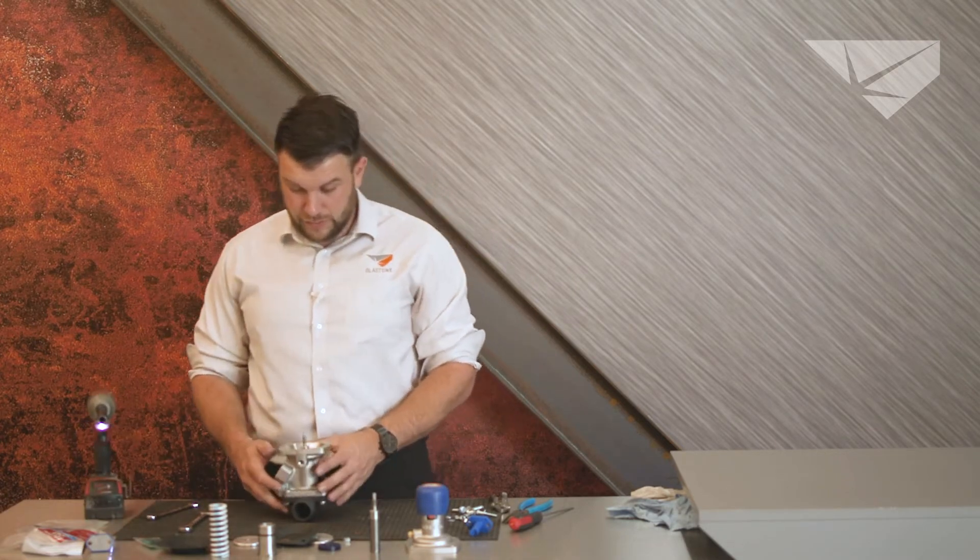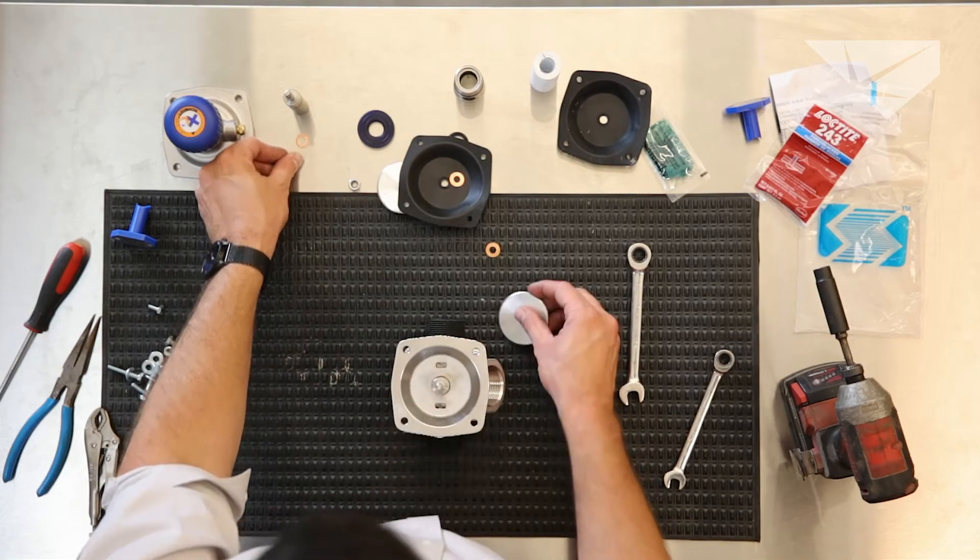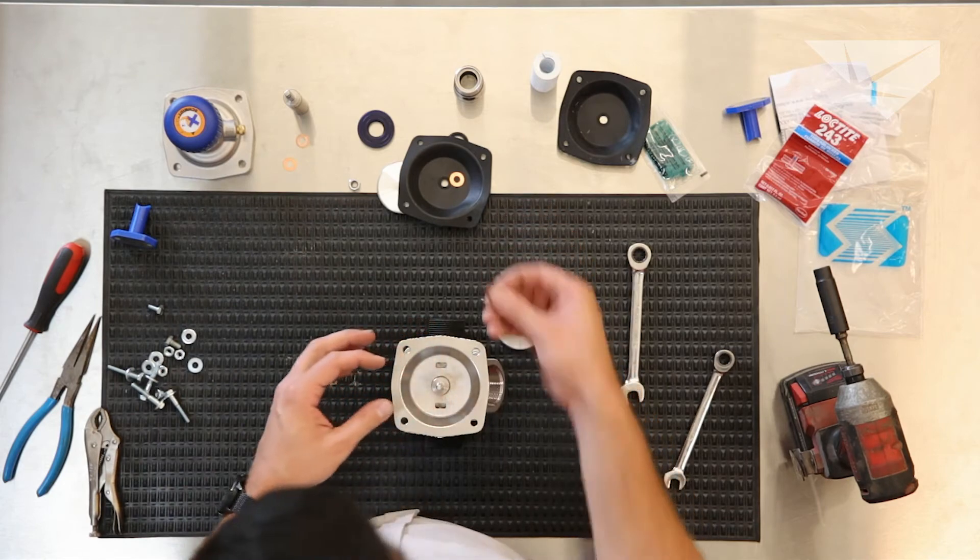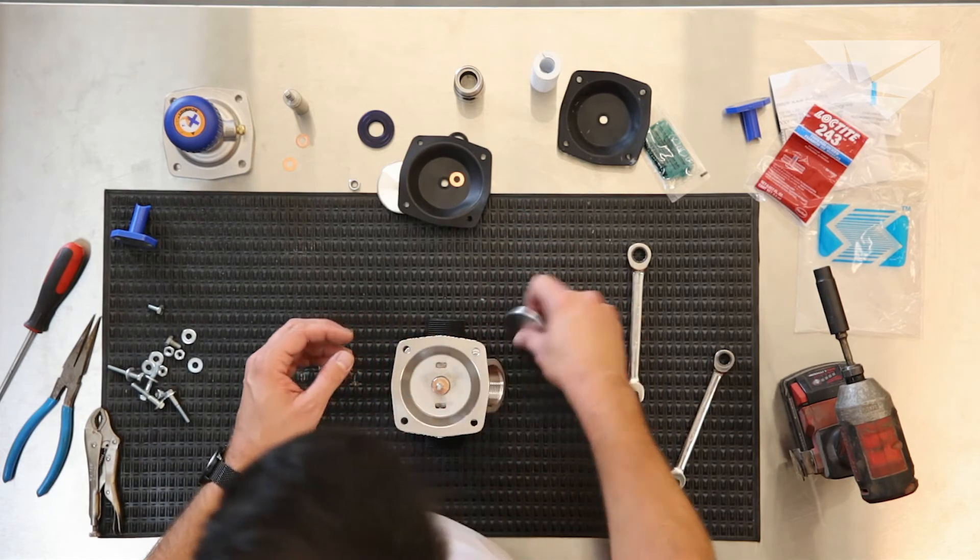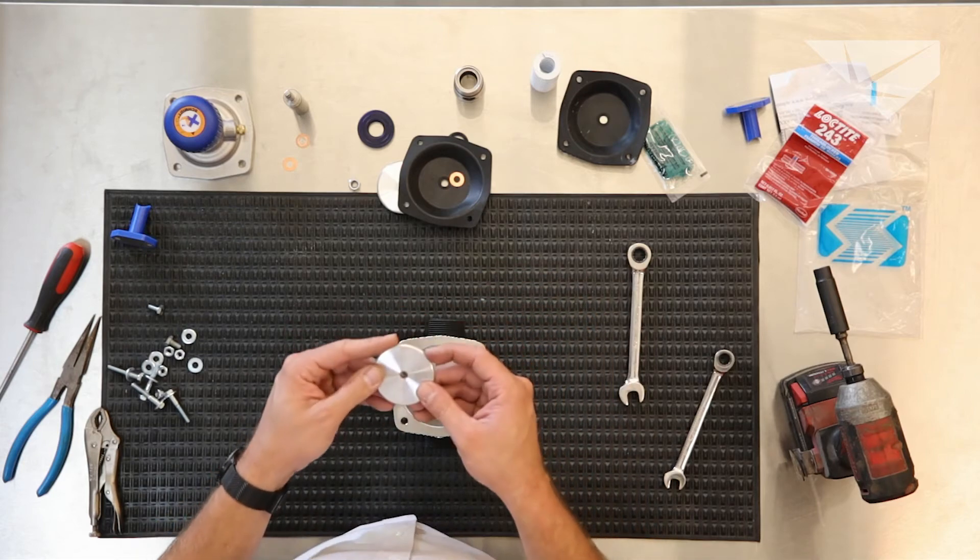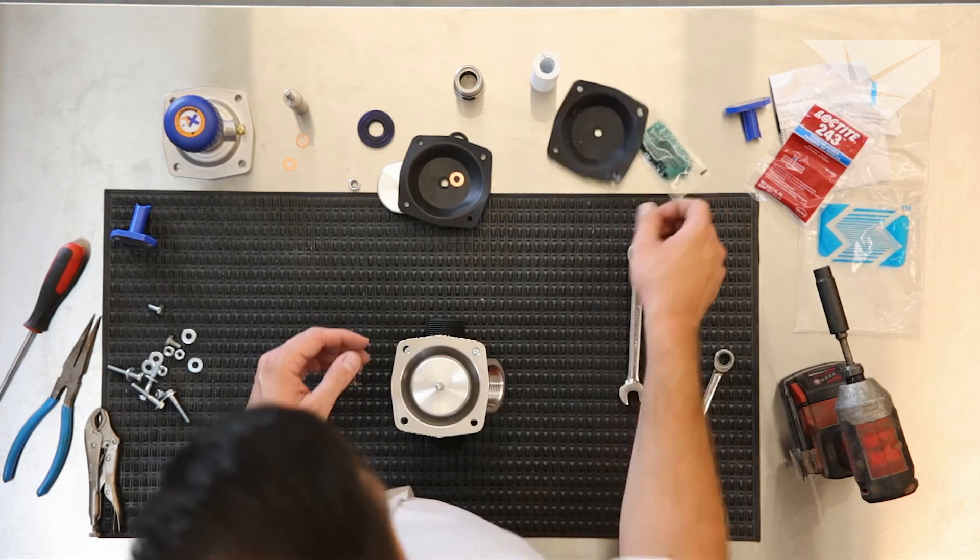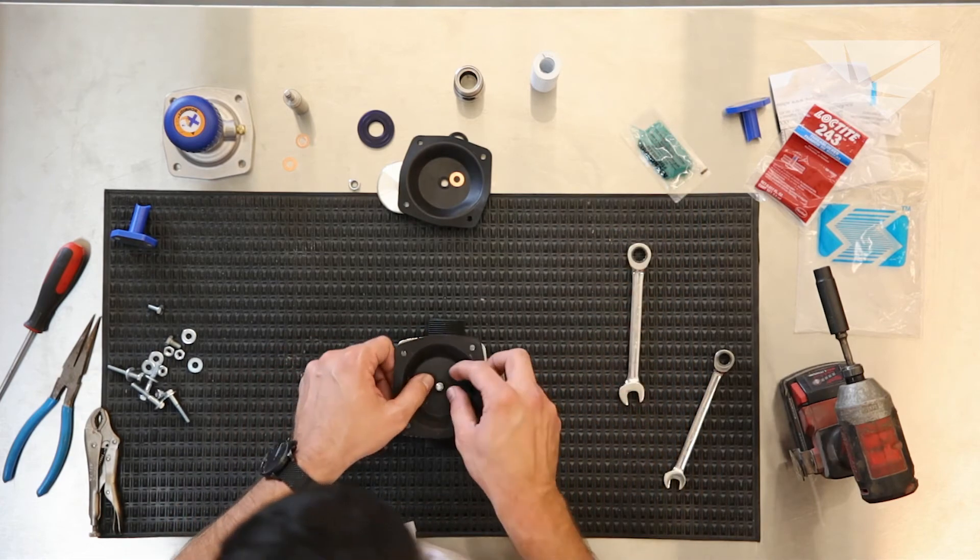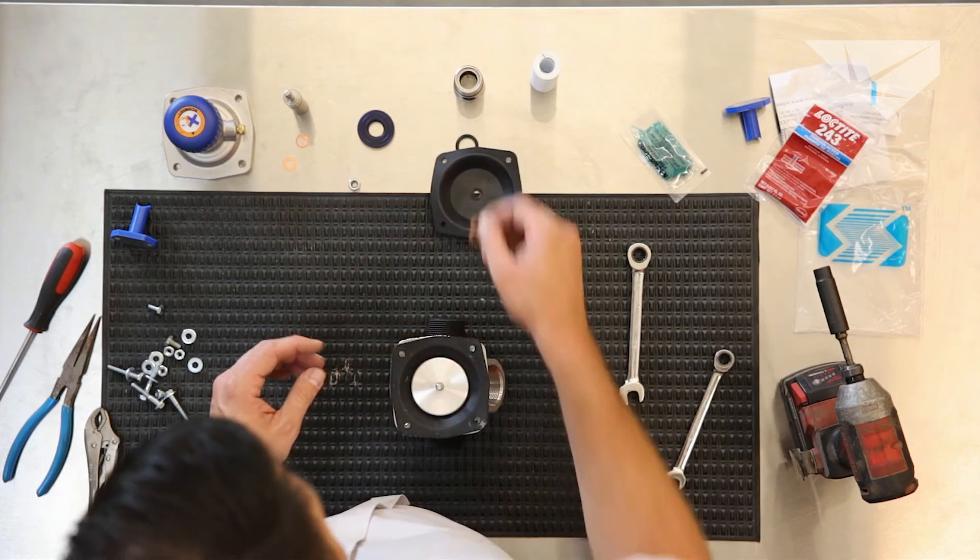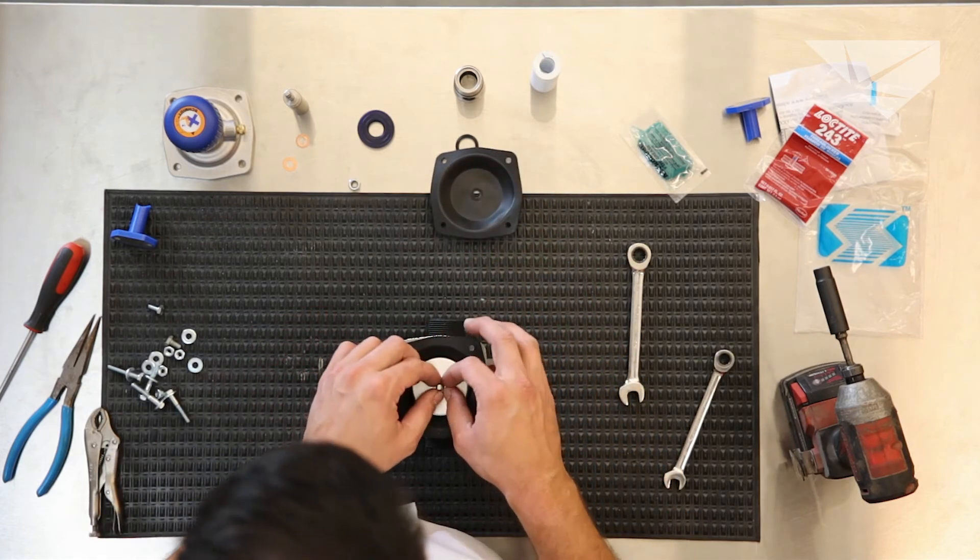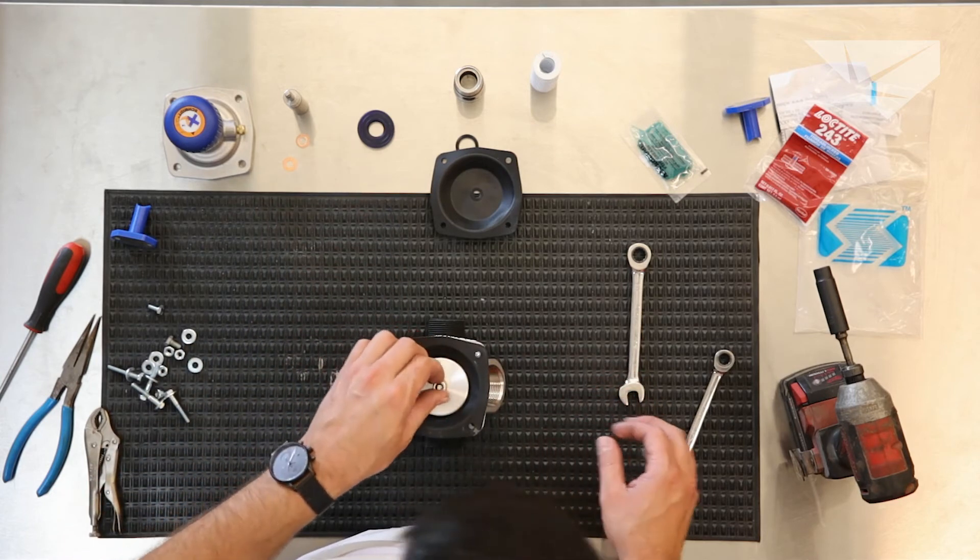Now we're going to assemble the top diaphragm. Get rid of our two old copper washers. First things first is a copper washer. Then the puck, obviously clean side goes towards the rubber so we don't tear it up. New diaphragm, the top puck, the remaining copper washer, and the nut goes back on there.